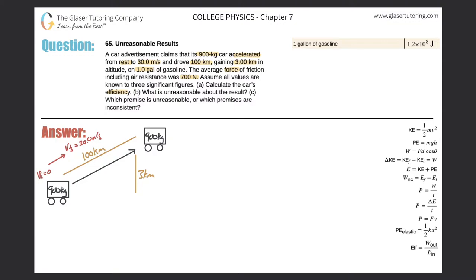Letter A says calculate the car's efficiency. The efficiency formula is down here on the bottom right. It says the efficiency will be measured as the work put out by the system divided by the energy put into the system.